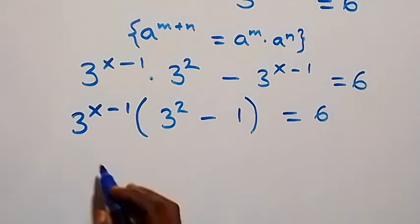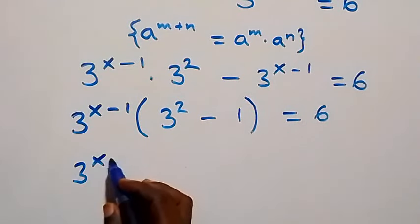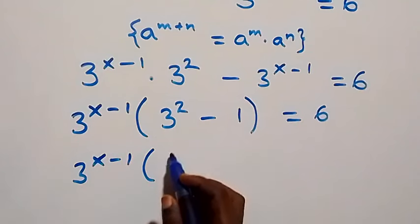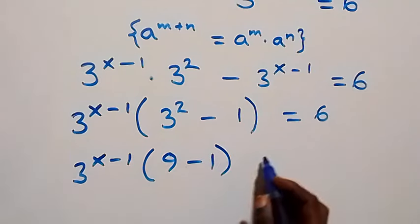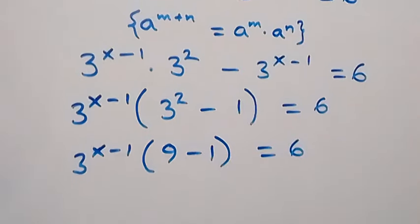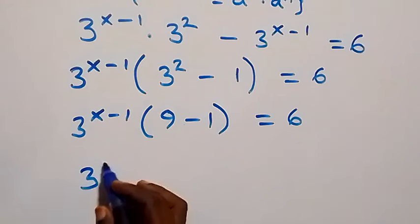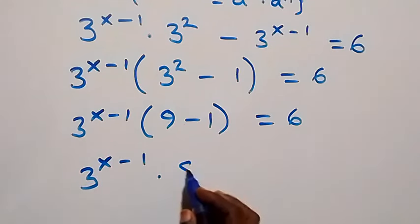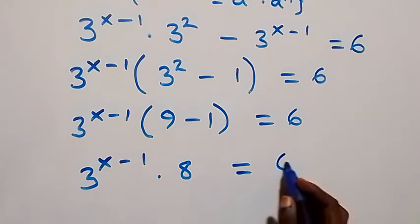That is, 3 raised to power x minus 1 into bracket 3 squared — 3 times 3 — minus 1, close bracket, equals to 6. Which is also 3 raised to power x minus 1 times 8, equals to 6.